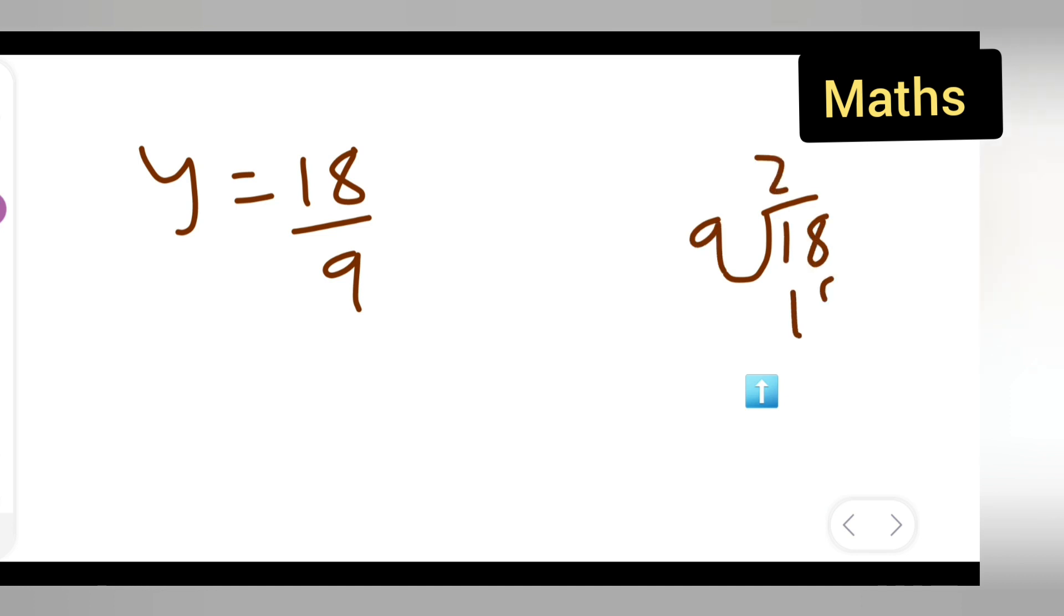9 2s are 18, right? So what is your answer? y is equal to 2 is your answer. Because when you do 18 divided by 9, 2 9s are 18, okay?